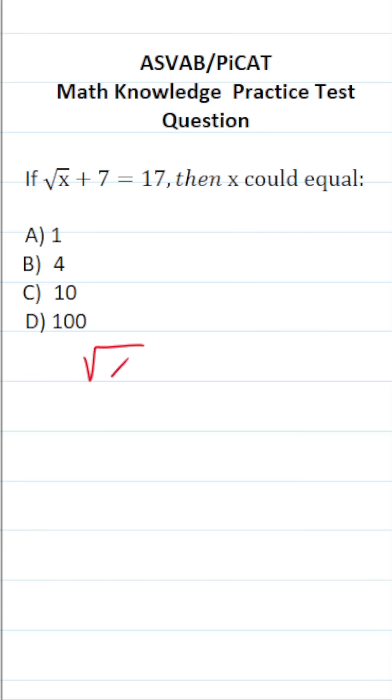So we're going to be solving this equation, the square root of x plus 7 equals 17, for x. In other words, we want to get x equal to something by itself.